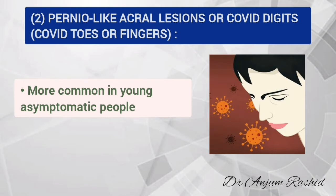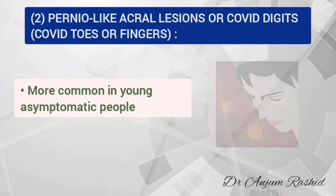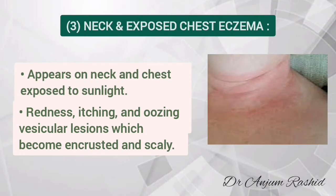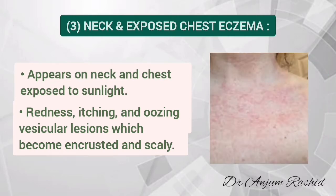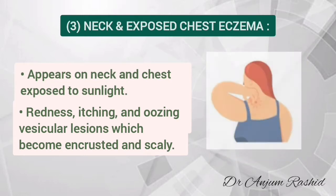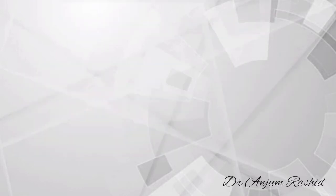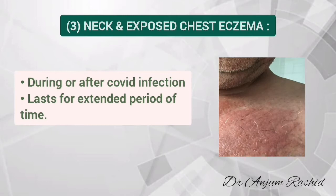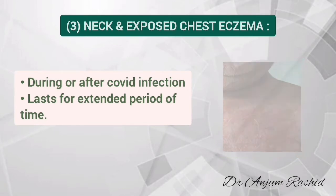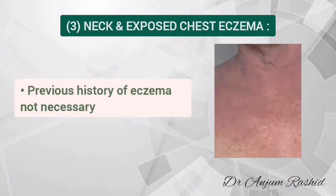Another important rash in COVID patients is neck and exposed chest eczema. This appears on the neck and chest area which is exposed to sunlight. It is characterized by redness, itching, and an outbreak of oozing vesicular lesions which become encrusted and scaly. This rash may appear during or after COVID infection and usually lasts for an extended period of time.